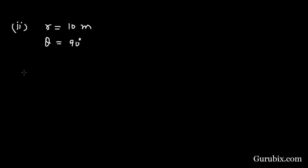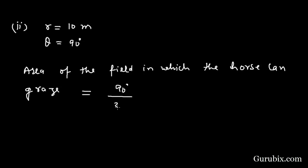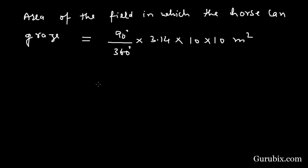We shall find the area of the field in which the horse can graze will be 90 degree over 360 degree times 3.14 times 10 times 10 meter square, and this equals 1 over 4 times 3.14 meter square.